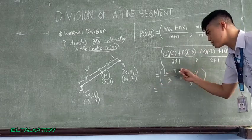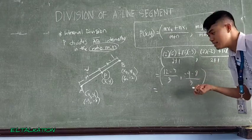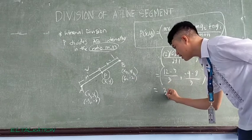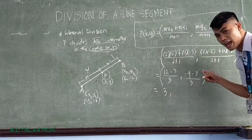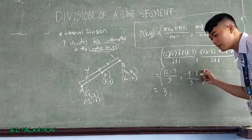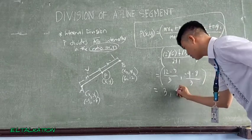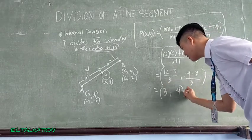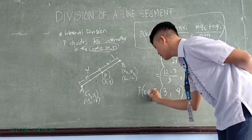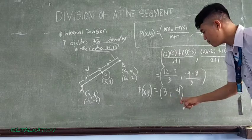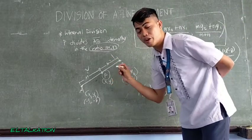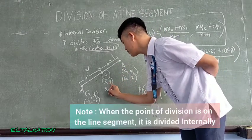Simplify. 2 times 6 is 12, 1 times negative 3 is negative 3, all over 3. So 2 times negative 2 is negative 4, 1 times negative 8 is negative 8, all over 3. Continue. So 12 minus 3 is 9 divided by 3 which is 3. Negative 4 minus 8 is negative 12 divided by 3, so that is negative 4. So meaning to say, the value of P x and y is 3 and negative 4. So the point P has a corresponding coordinate which is 3 and negative 4.